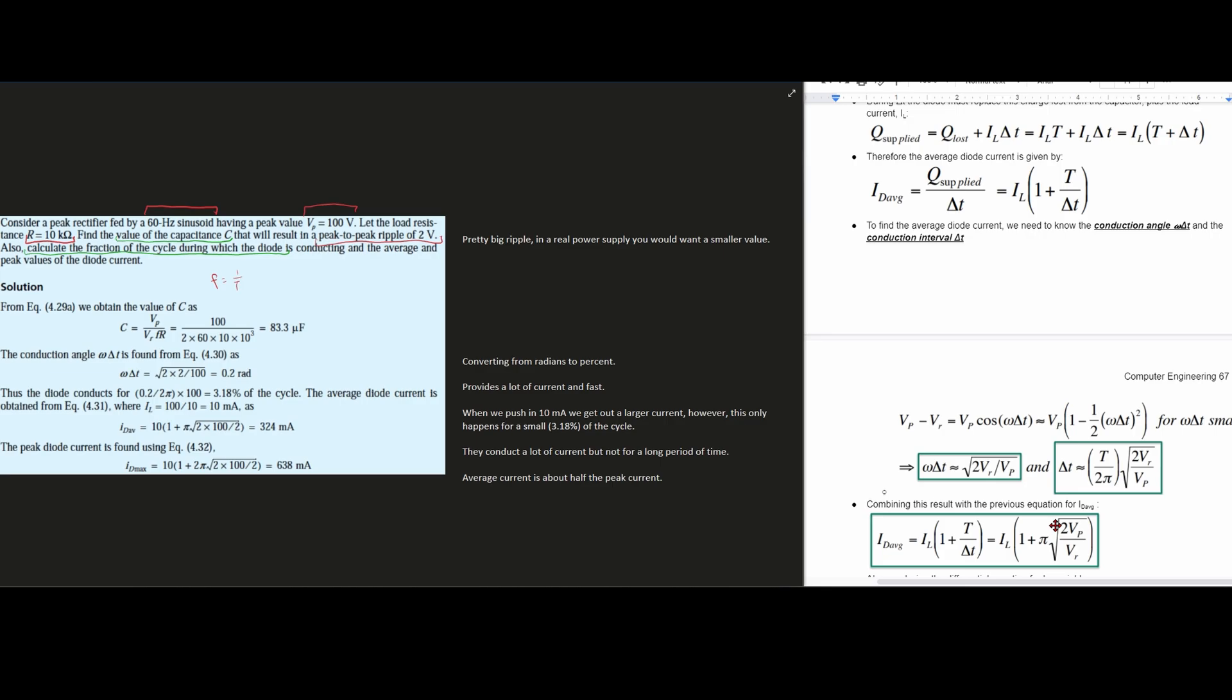Now we want to convert from radians per second to our percentage. We have 0.2, which is our rads, and it's going to be divided by 2 pi multiplied by 100. This is going to give us 3.18% of our cycle, and the 2 pi is just to put it in its angle form.